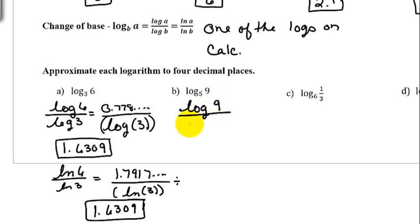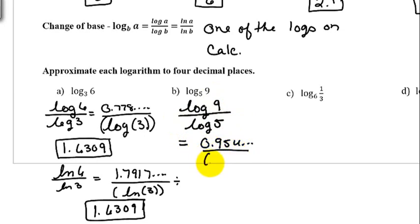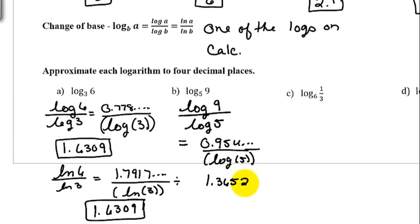The next example is log base 5 of 9. Using whichever log you want, this would be log(9) divided by log(5). Type in log(9) — I get 0.95 and more digits — then divide by log(5) in parentheses. When we compute this we get 1.3652, and the number after the 2 is a 1, so we keep the 2 as 2. Final answer: 1.3652.